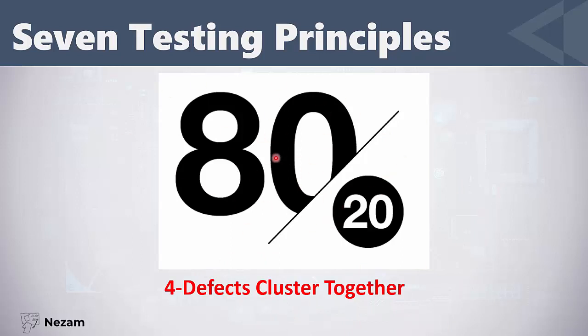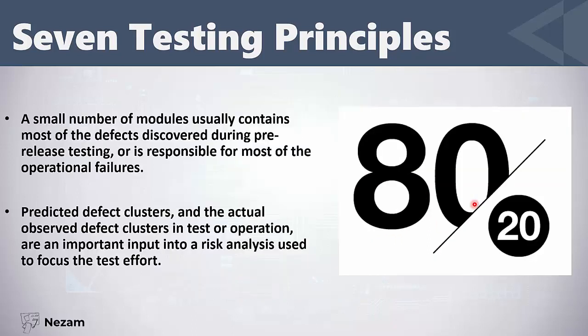Most of the time, 80% of your problems are caused by 20% of the causes. This is called the Pareto principle, and it is applied to software testing as well. A small number of modules in your software are the reason for most of the defects discovered during testing or found later in the operational environment. As a tester, you should track defect clusters and use that information in risk analysis to focus your testing effort.